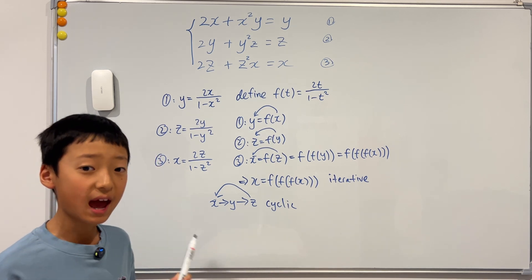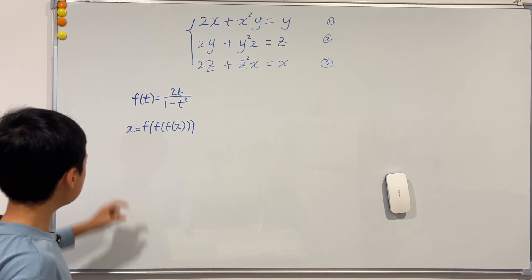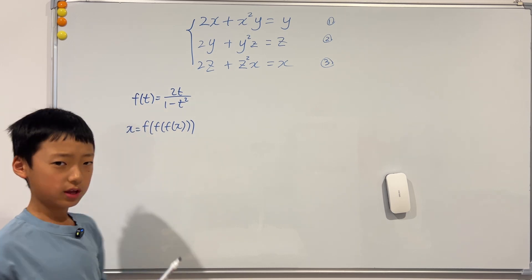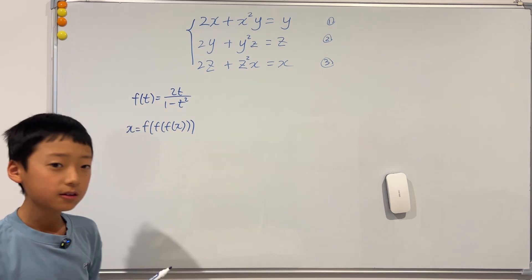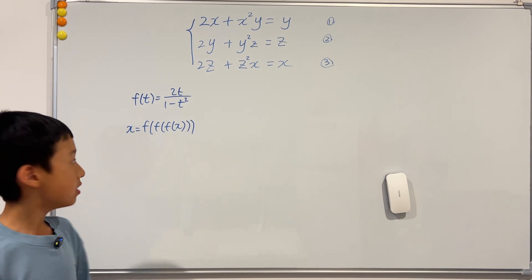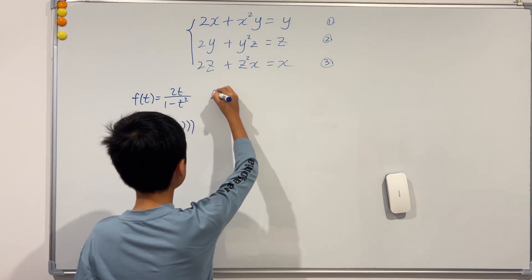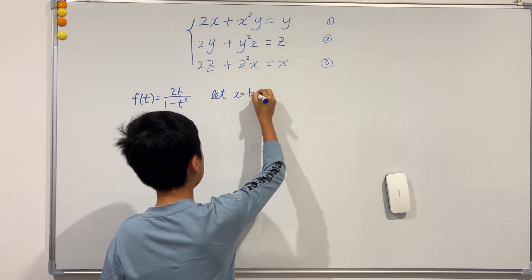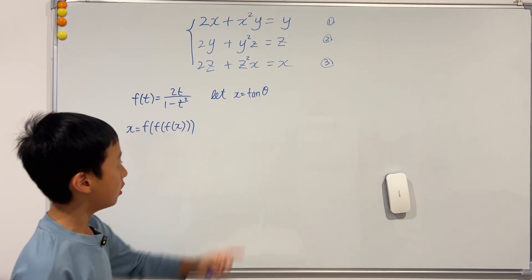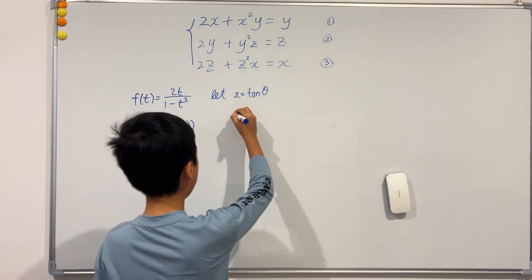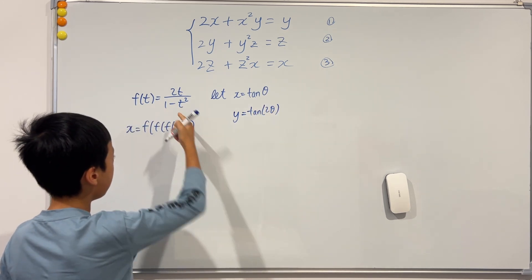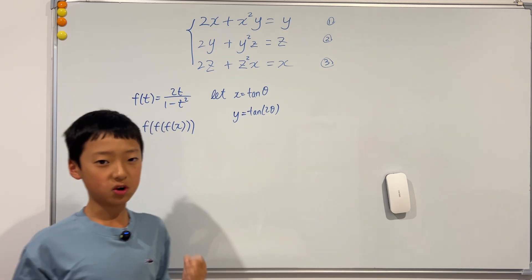So we have our two key ingredients. If you noticed, f(t) is actually just a standard representation of the t-formula. So we do a simple substitution: let x equal tangent theta. Most people would think to let x be tangent(theta/2), but I want to make it a bit simpler. We see that y equals tangent(2 theta), because applying this function — the t-formula — returns the double angle.